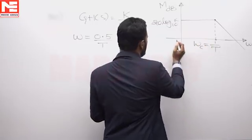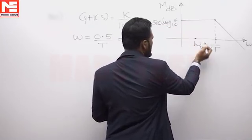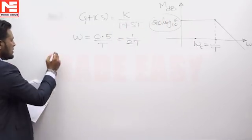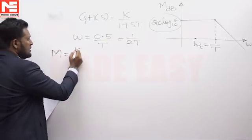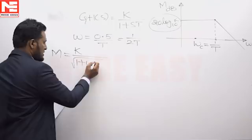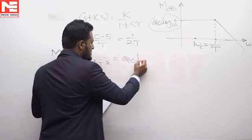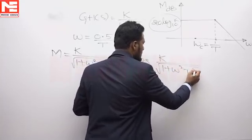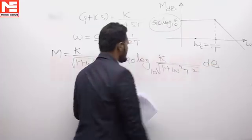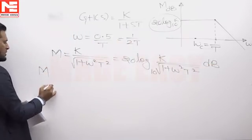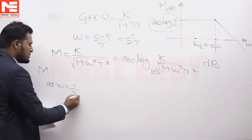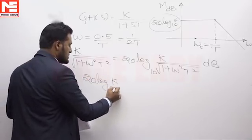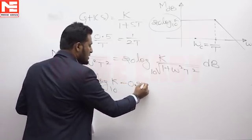As per the plot, the actual magnitude at a frequency that is one octave below the corner frequency is found to be 20 log K (base 10). The actual magnitude is K divided by root of (1 + ω²T²), that is 20 log of K divided by root(1 + ω²T²) in decibels. This magnitude at ω = 1/(2T) is calculated as 20 log K (base 10) minus 0.97 dB.